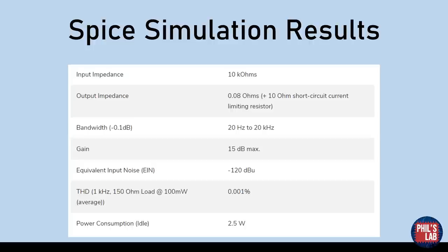The bandwidth which I specified at a minus 0.1 dB point is 20 hertz to 20 kilohertz, so pretty much the audio range. The gain is 15 decibels max but that is easily changed. The equivalent input noise is specified at minus 120 dBu. The total harmonic distortion at one kilohertz into 150 ohm load is about a thousandth of a percent.